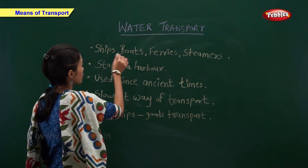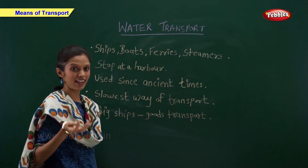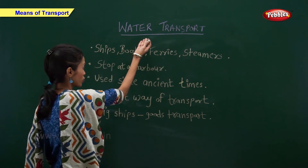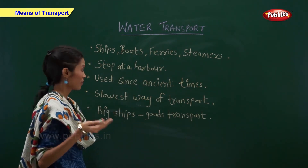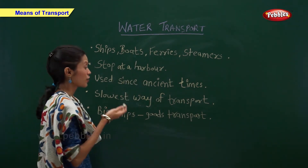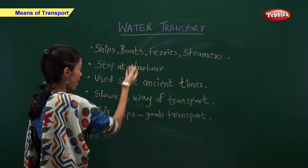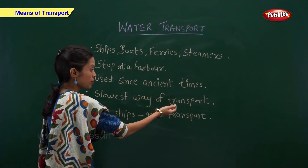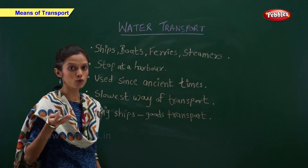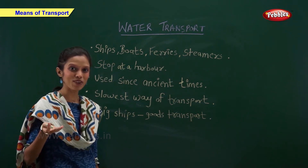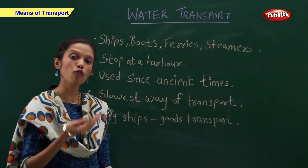Water transport: ships, boats, ferries and steamers are the examples of water transport. Water vehicles stop at a harbour. Water vehicles are used since ancient times. These are the slowest way of transport. Big ships are used for goods transport. Now let us have a look at some of the examples of water transport.